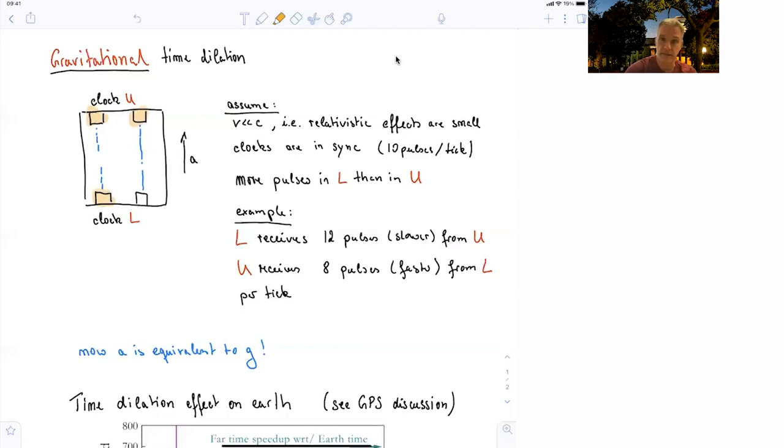Now, this acceleration, as in this example, as I've discussed previously, is equivalent to being in a gravitational field. So we have a time dilation effect on Earth. We already discussed the consequence in the discussion of GPS systems.